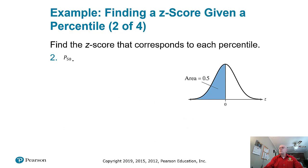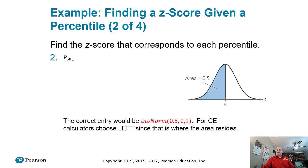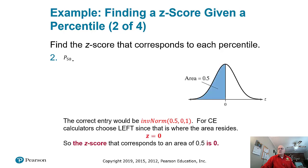Next: find the z-score that corresponds to the 50th percentile. The 50th percentile means half the people have measurements smaller than that, which is exactly half. So our z-score is right at zero. Draw your picture — it's staring at you. You can just write zero. If you use Inverse Normal with 0.5, 0, and 1, and left for CE users, you'll get a z-score of zero.